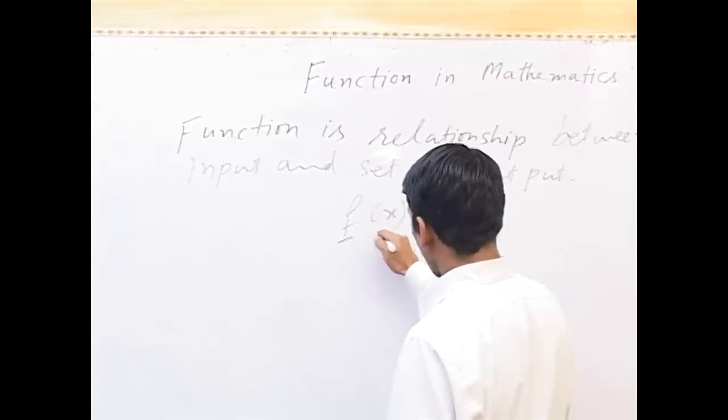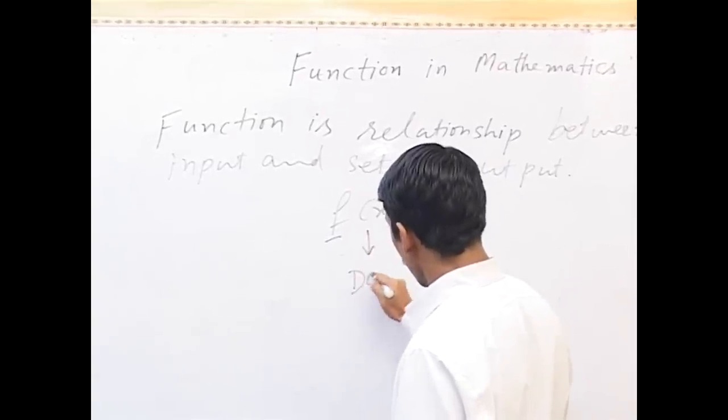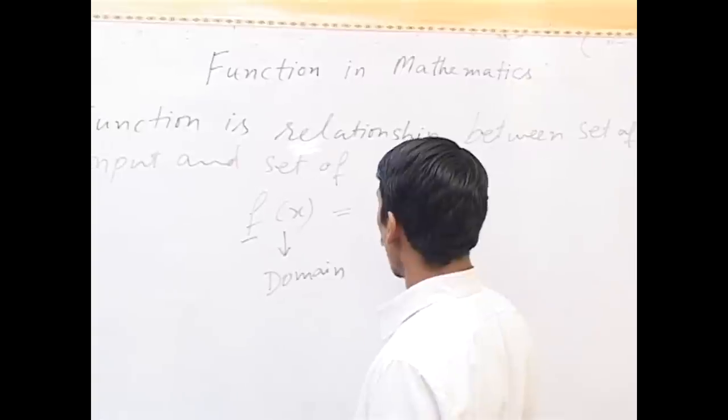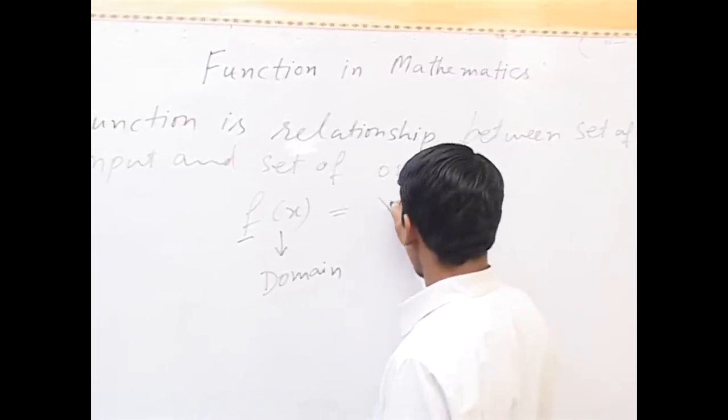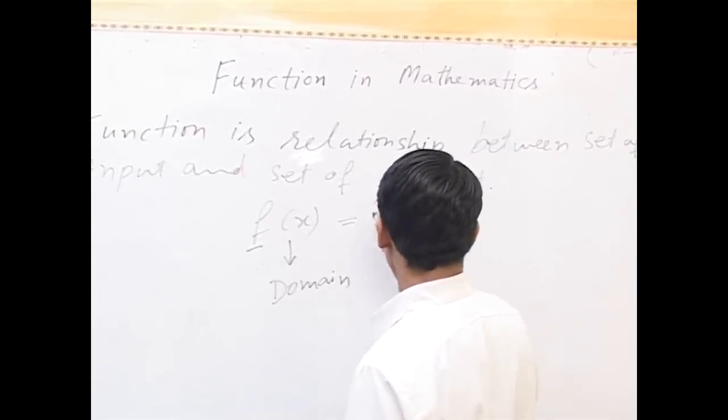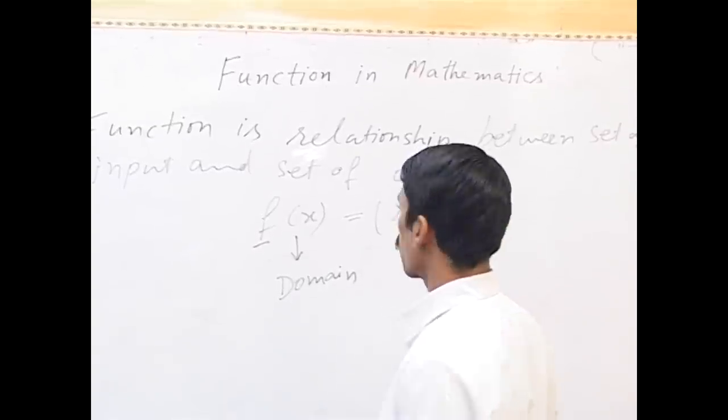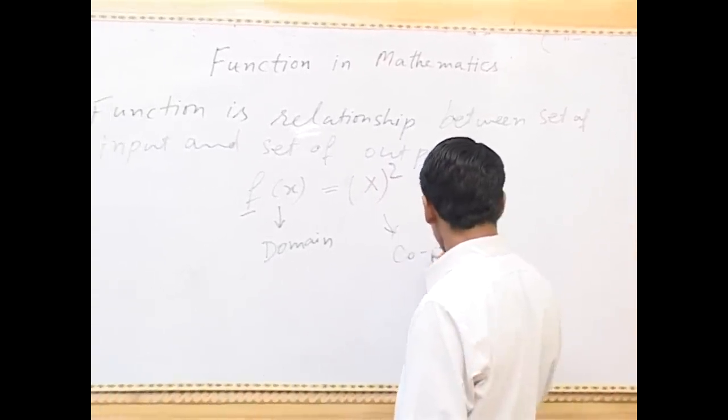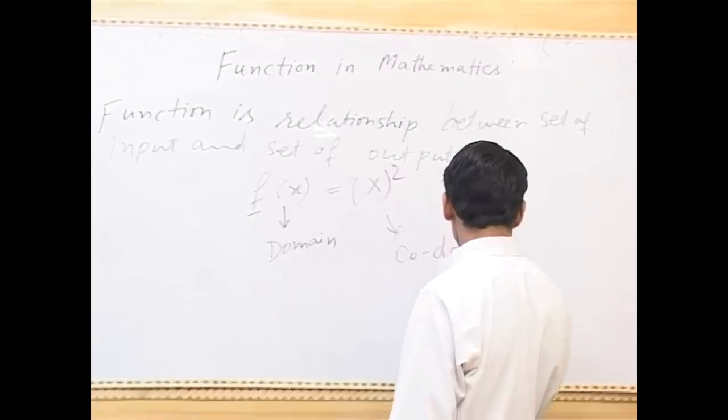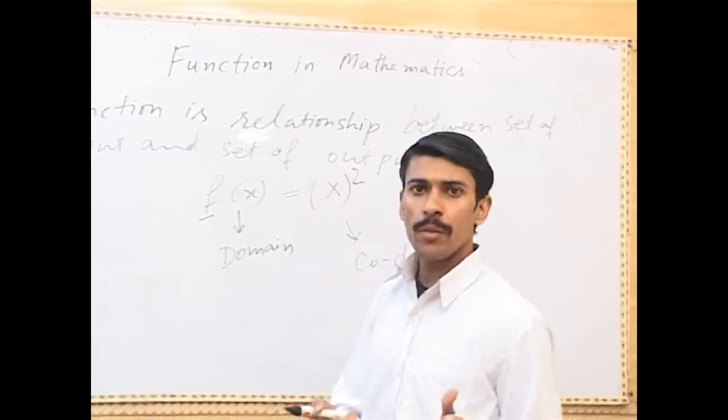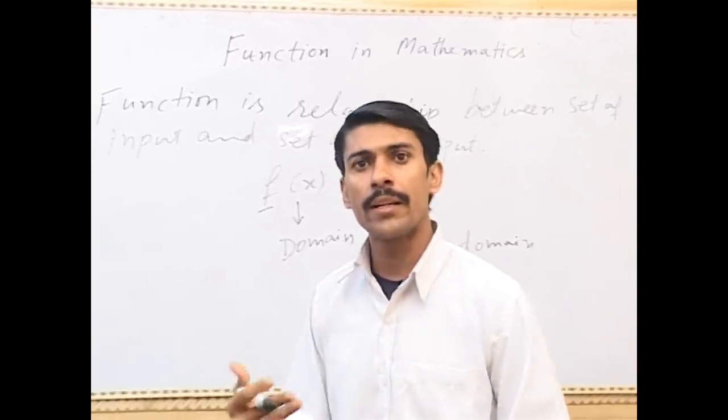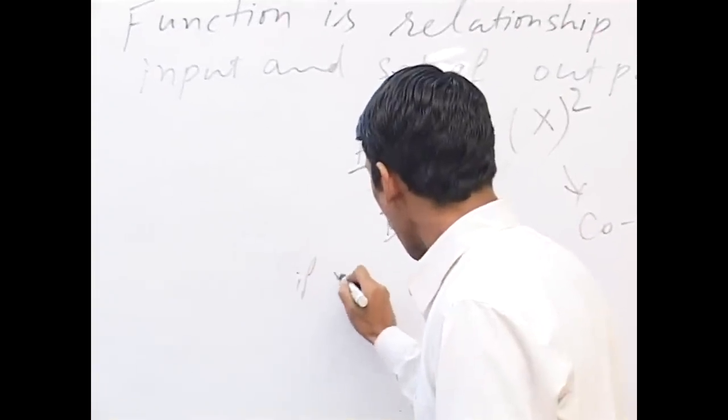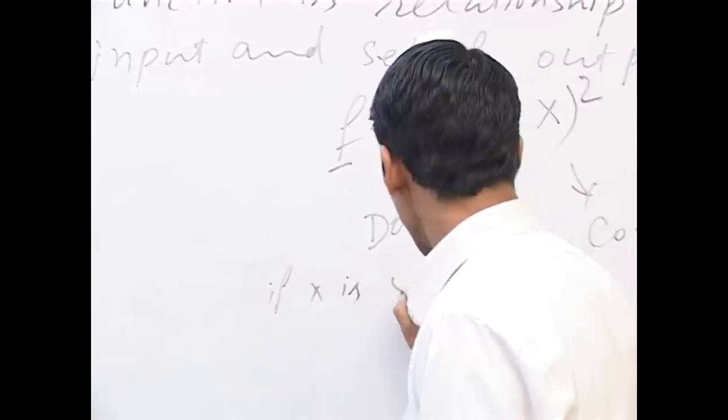And this is a domain and its relationship with output, means this is the output and it is called codomain. Now if we put the input and we will get the output. Suppose if x is 5.